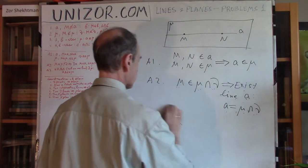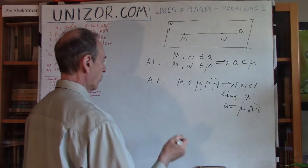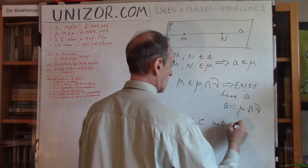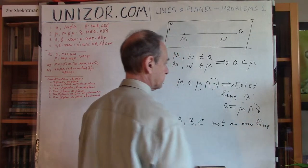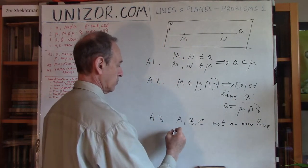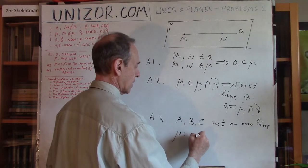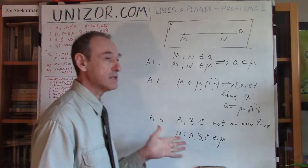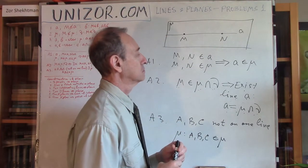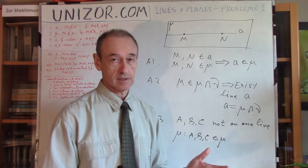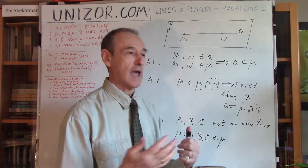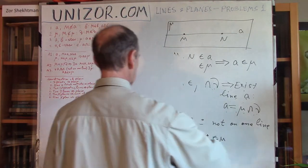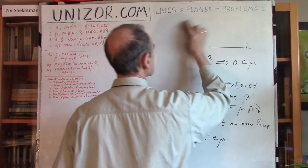The third axiom is that if you have three points A, B, and C not on one line, then there is one and only one plane Mu such that all of them belong to this plane. These are axioms — we just take them without any proof. Not because it's an obvious thing; it's not really obvious, but we don't have a choice. Axioms are statements which we take as true without proof, because there is nothing more fundamental than these axioms.